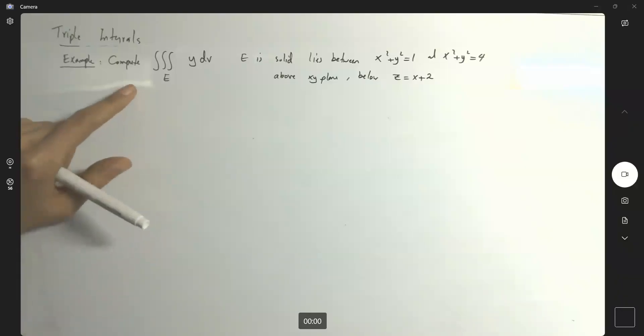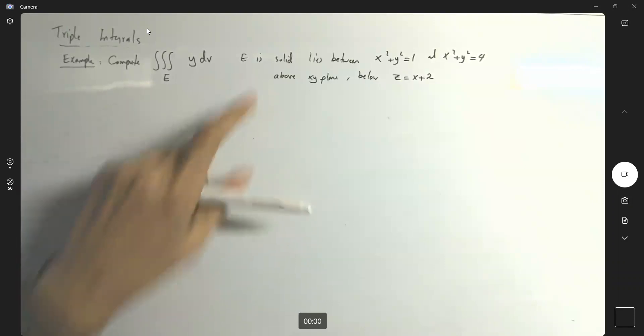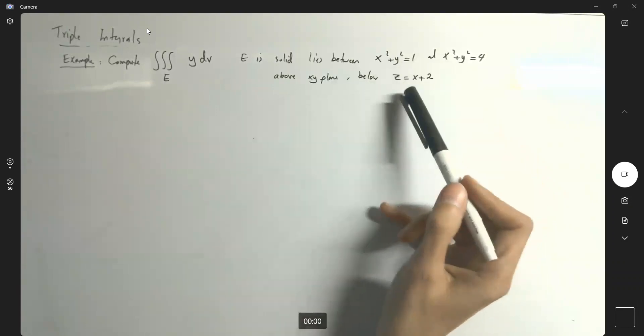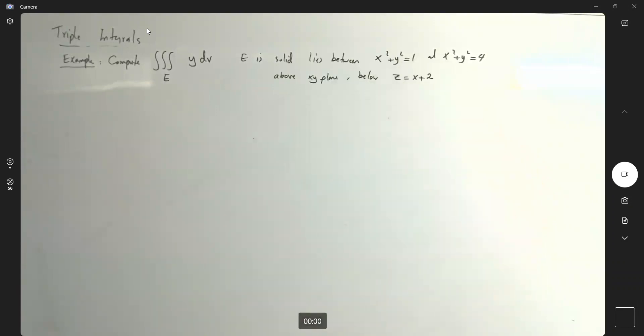Suppose we want to compute the triple integral of y dV over region E. Region E is a solid that lies between two cylinders above the xy plane and below z equals x plus 2. Very good.